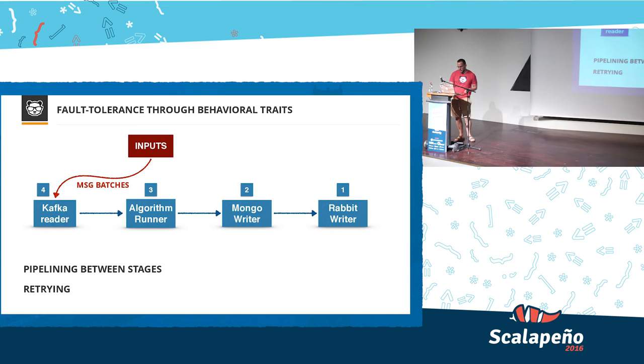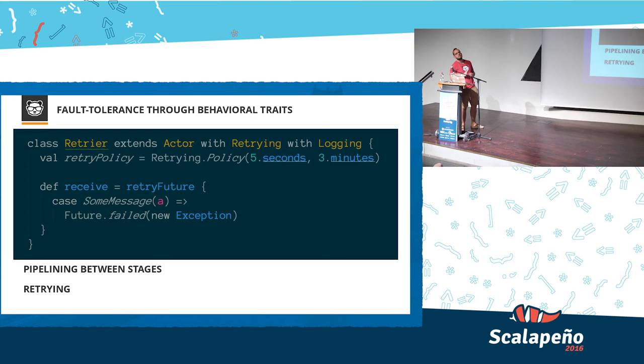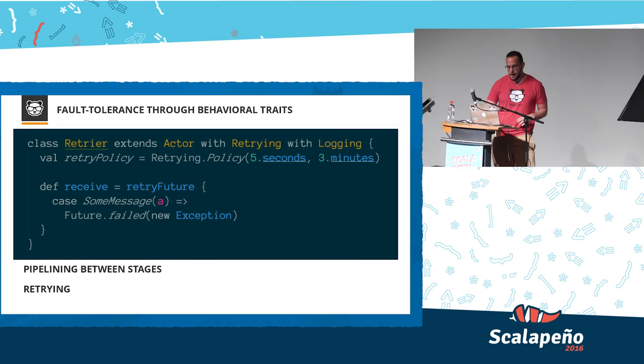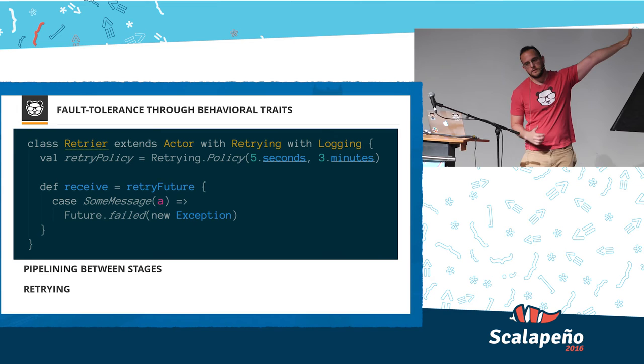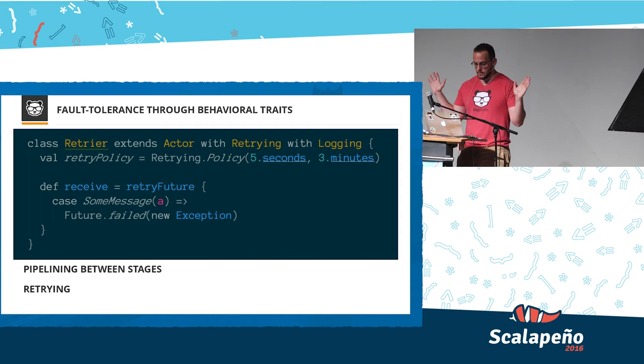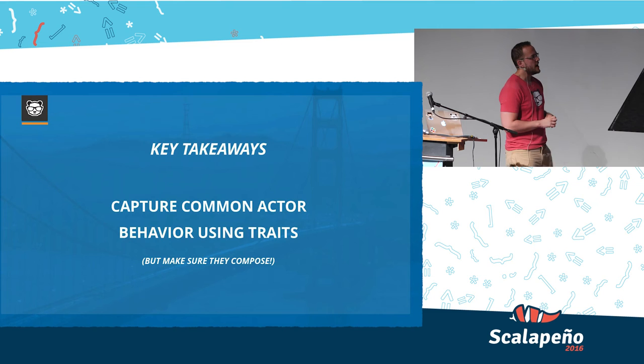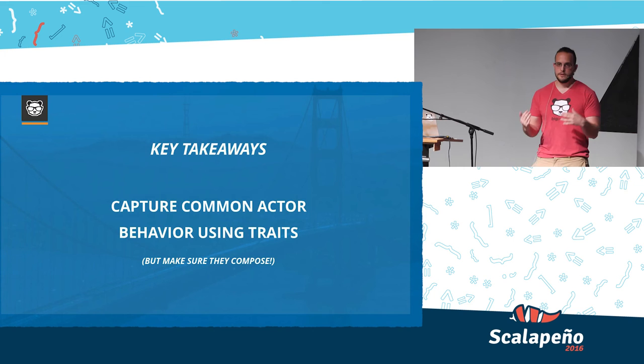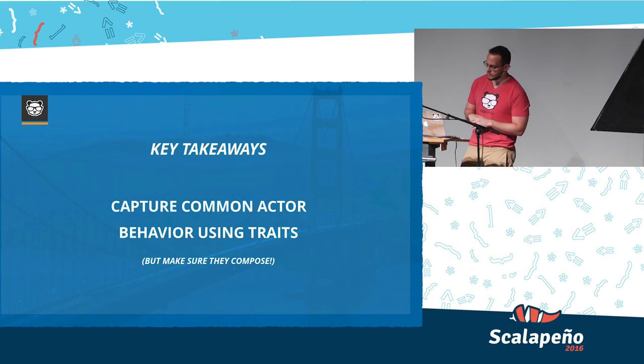I've included a code sample. It will be available on the slides. This is the amount of lines that is required to make use of the behavioral trait implementing retrying. You just wrap the receive handler with a method and it implements retrying. The key takeaway is to capture common actor behavior using traits, but you have to make sure they compose because if you're trying to mix in several traits, as is always the problem with multiple inheritance, it doesn't always compose.